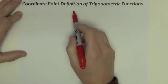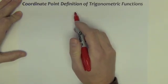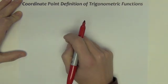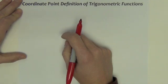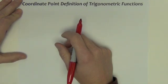Now we're going to move on to what we call a coordinate point definition of the trig functions. We have the opposite adjacent hypotenuse definitions, but now let's look at coordinate point definitions.